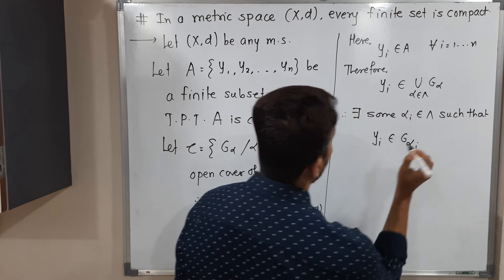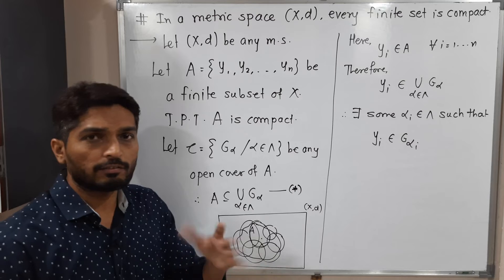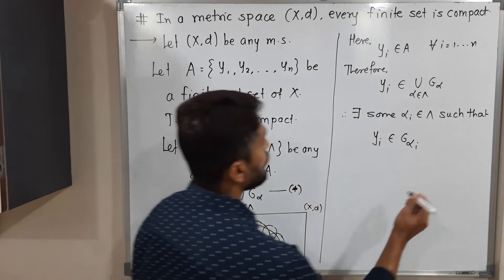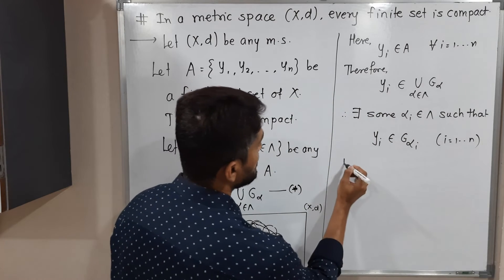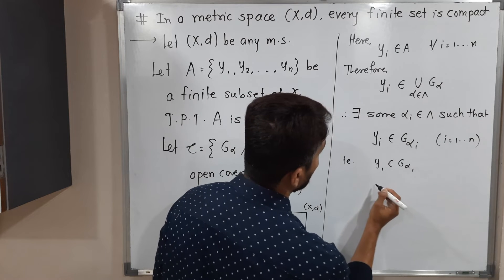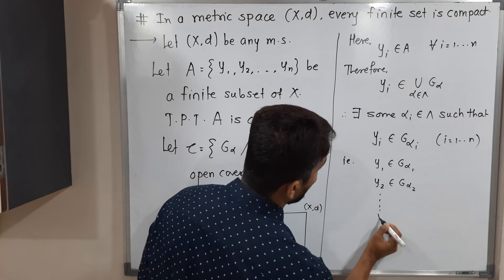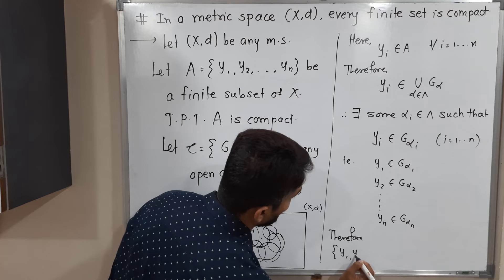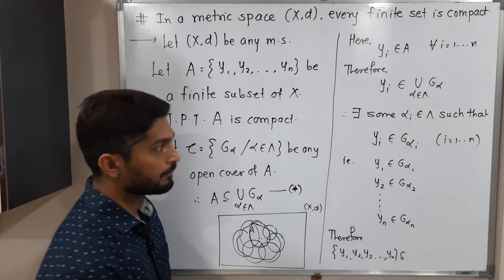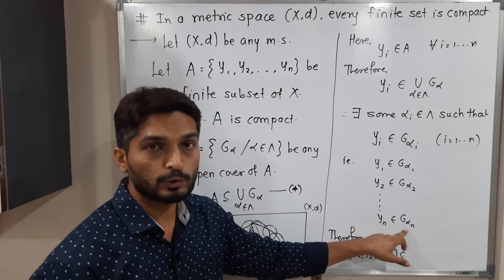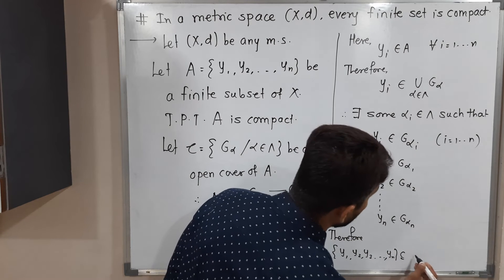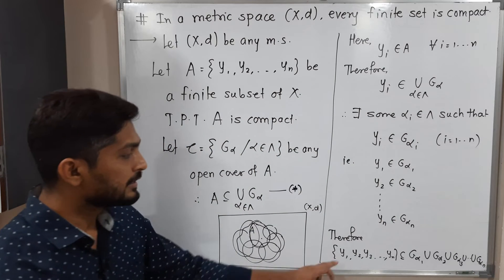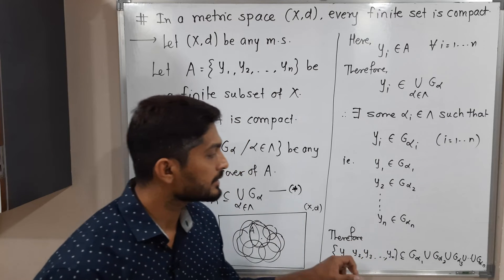There are many sets G_alpha, so y_i belongs to the union means y_i belongs to at least one set, which I am denoting G_{alpha_i}. This is true for all i from 1 to n. That is: y1 belongs to G_{alpha_1}, y2 belongs to G_{alpha_2}, and so on, y_n belongs to G_{alpha_n}.